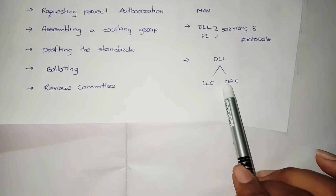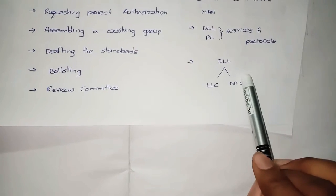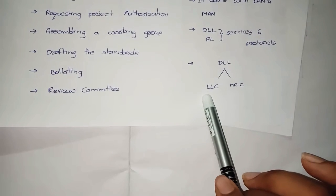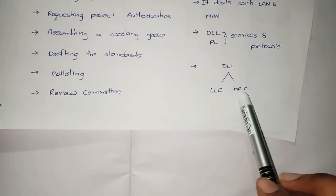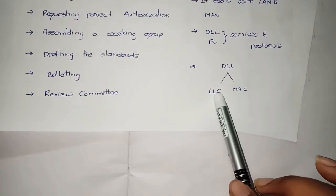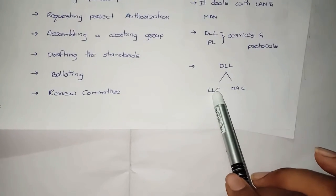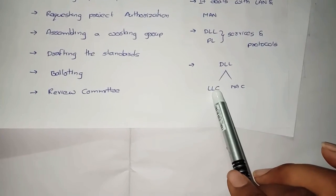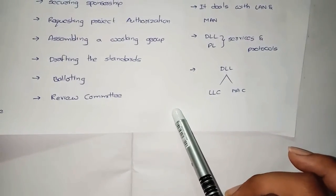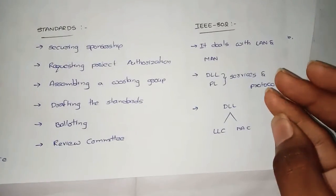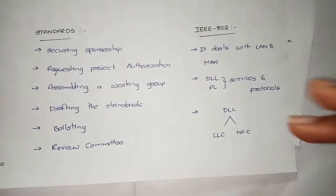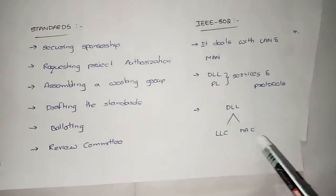According to IEEE 802, the data link layer is categorized into two sub-layers: LLC, which stands for logical link control, and MAC, which stands for medium access control. So in the OSI model, under IEEE 802, the physical layer and data link layer are the relevant layers, and within the data link layer there are two sub-layers: LLC and MAC.